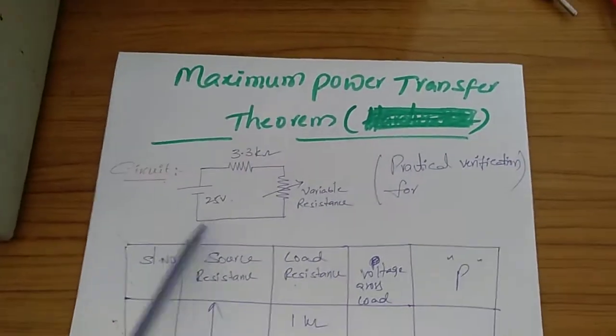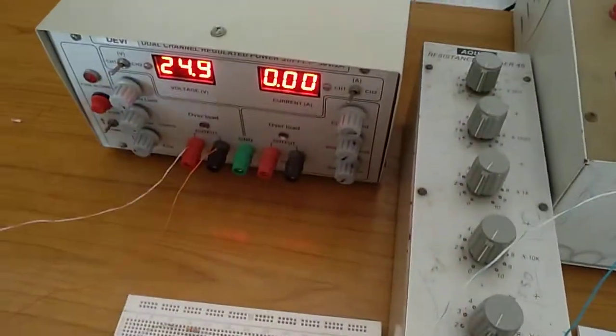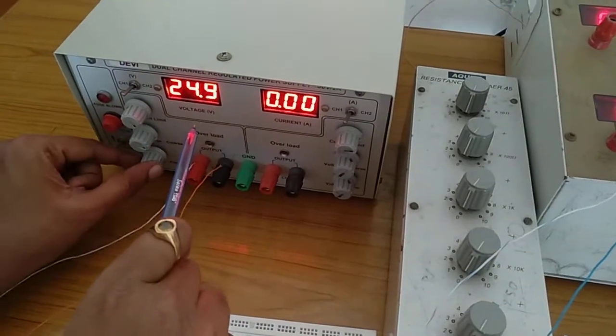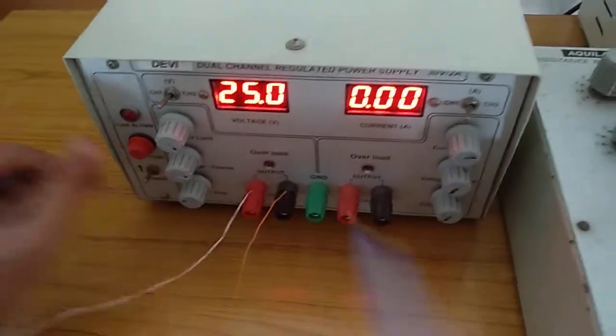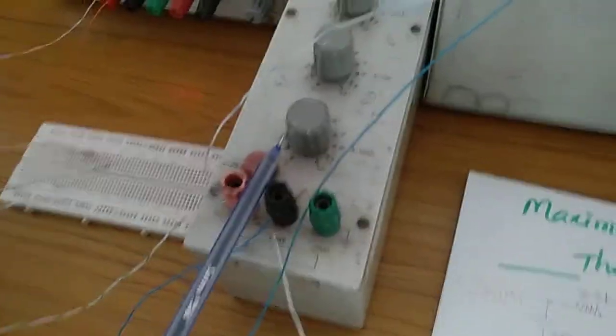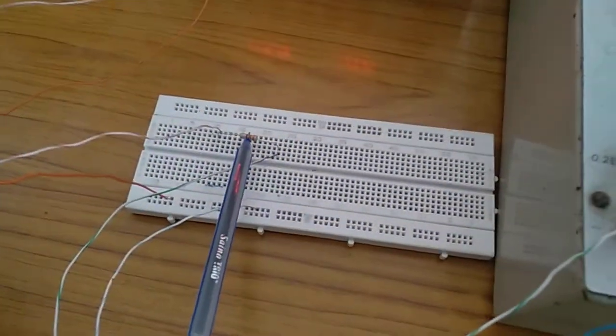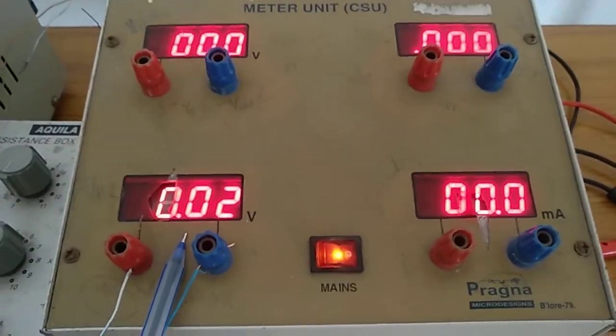So for practical verification here, I was applying 25 volts. This is a decade resistance box which is a load resistor. This is a 3.3 kilo ohms source resistor and this is a voltage across the load.